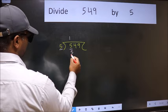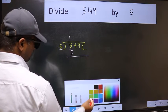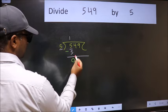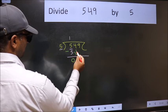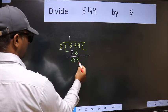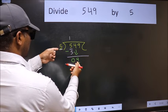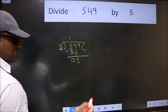Now we should subtract. We get 0. After this, bring down the beside number, so 4 down. Now here we have 4 and here 5. 4 is smaller than 5, so we should bring down the second number.